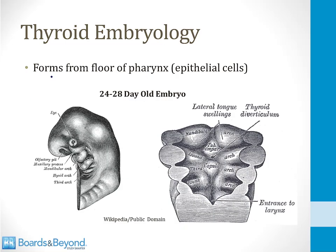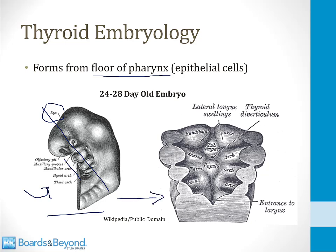In the fetus, the thyroid forms from epithelial cells in the floor of the pharynx — cells at the base of the mouth and tongue that dive down into the neck to form the thyroid. The drawing on the bottom left shows a 24-to-28-day embryo with recognizable structures like the eye. In the middle of the embryo are bumps called the pharyngeal arches. If we dissected this fetus and looked down from above, we would see what's shown on the right side of the screen.